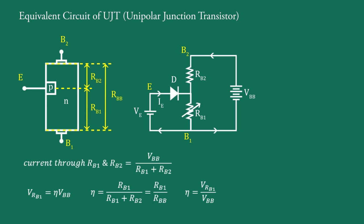In equation form, the emitter firing potential is given by VP equals eta VBB plus VD. When the diode starts conducting, holes are injected from the P-type material into the N-type bar. These holes are swept down towards terminal B1, and this decreases the resistance between the emitter and B1.